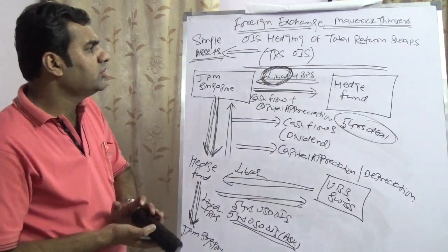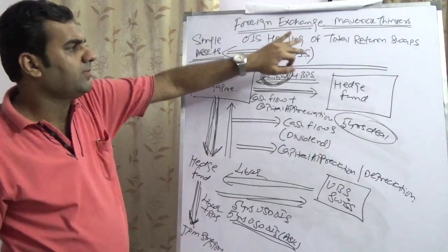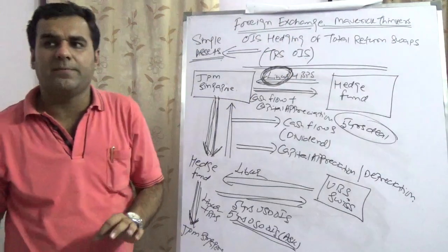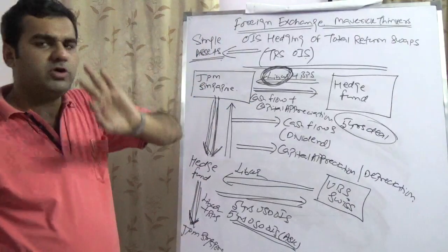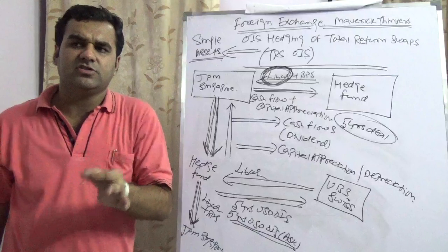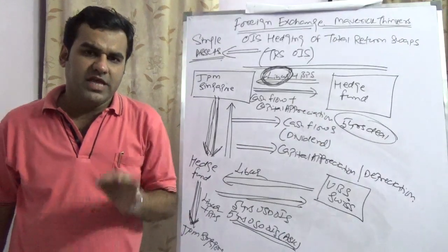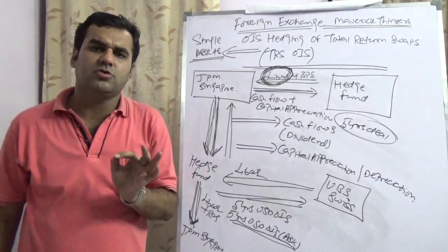This is how you can apply the overnight index swap on total return swap. In simplistic speaking, we can also refer to this as conversion of floating TRS into fixed TRS. That's why overnight index swaps is going to get used.